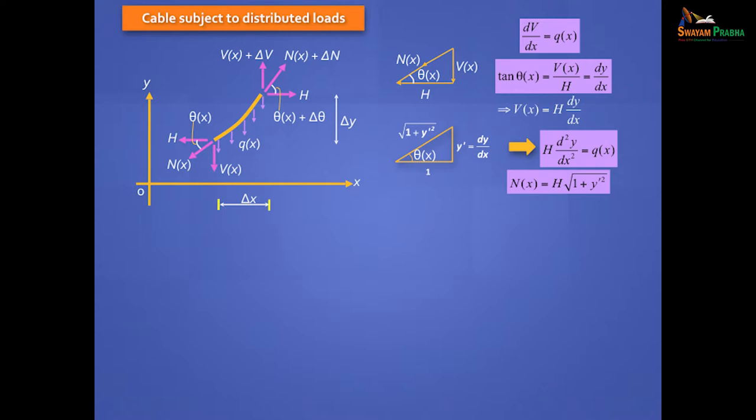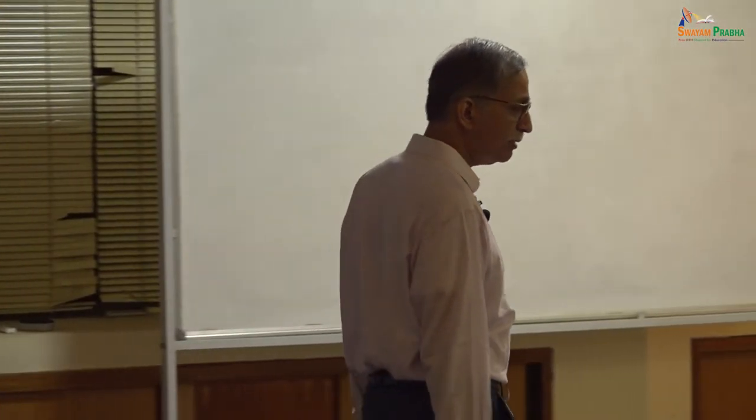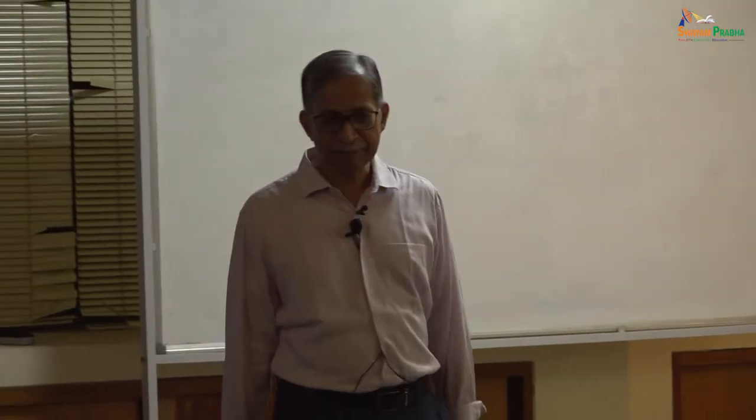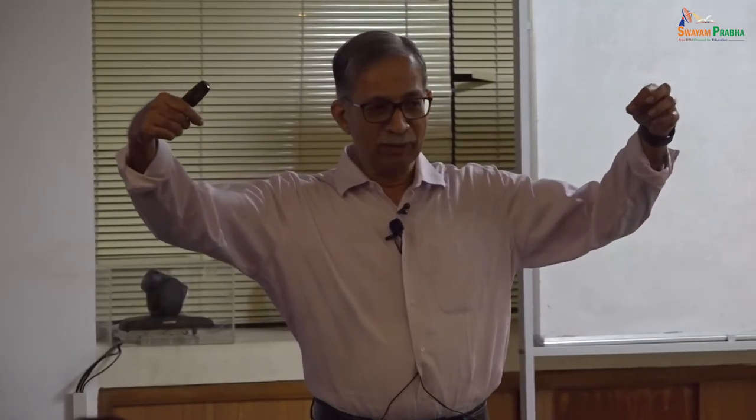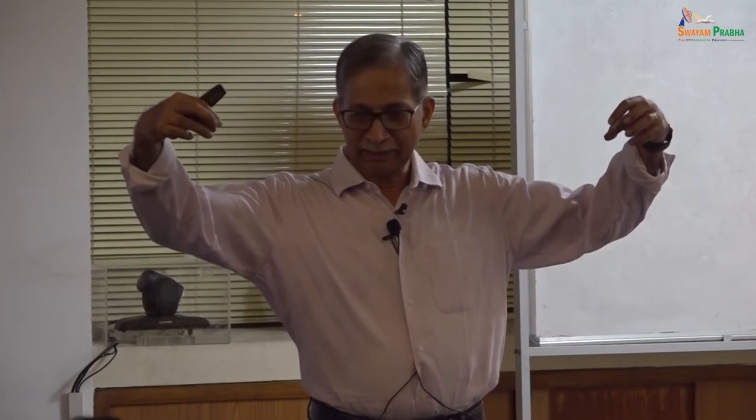So now we'll look at other real load possibilities. One of the commonest load possibilities is when the load is uniformly distributed not along the horizontal span but along the curved span. What's a good example of such loading? Self-weight. You take a chain or a necklace and you hold it — there's only one loading, its own weight.